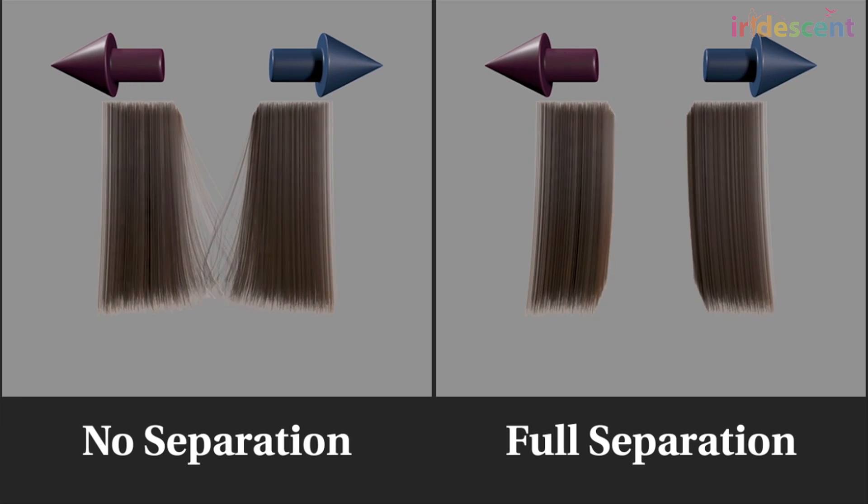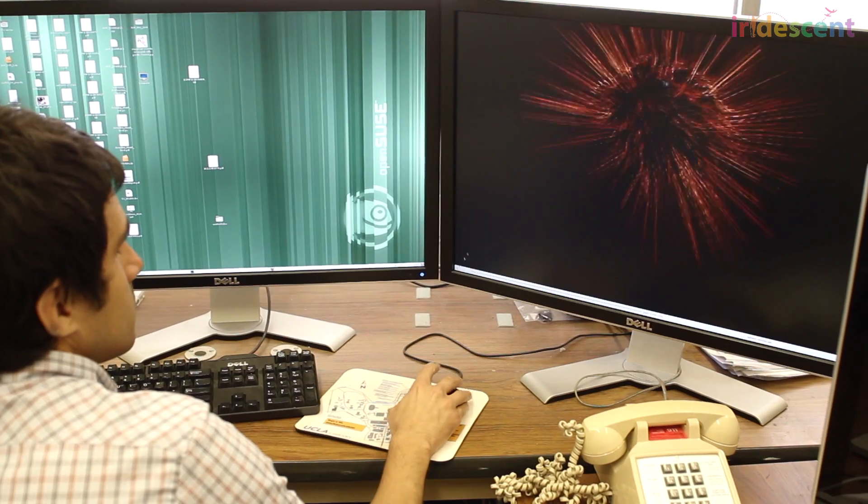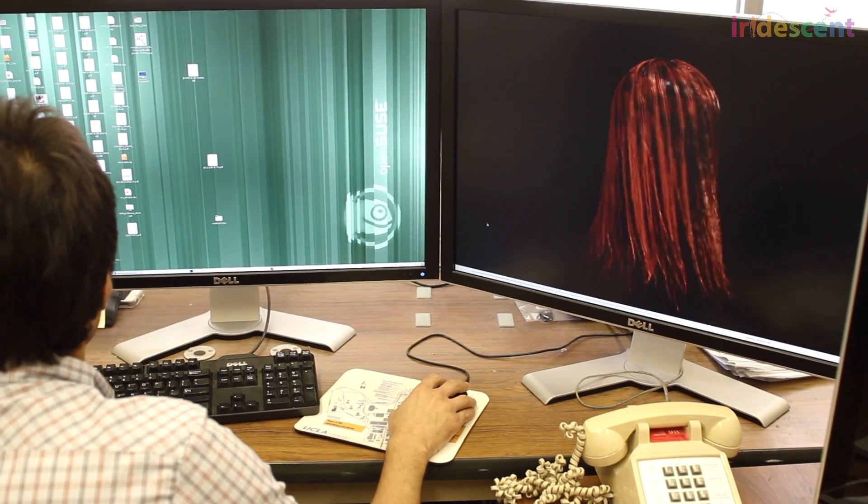But could you recreate our real and imperfect world in a computer? UCLA professor of applied mathematics Joseph Turan does just that.